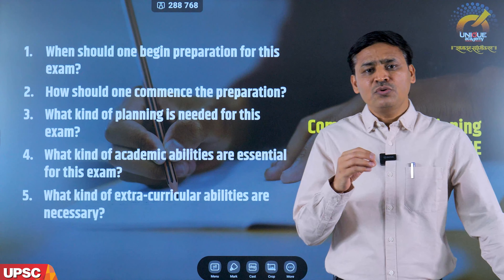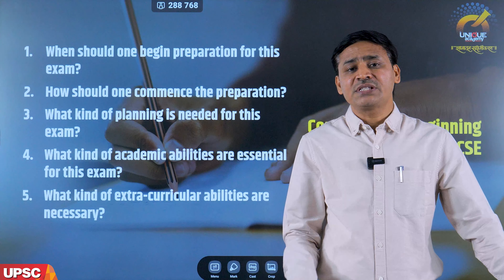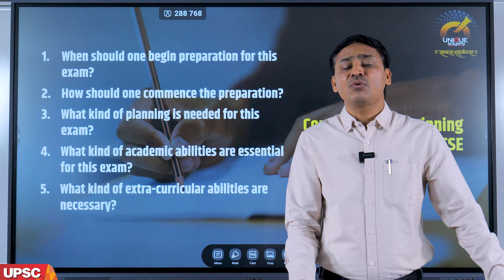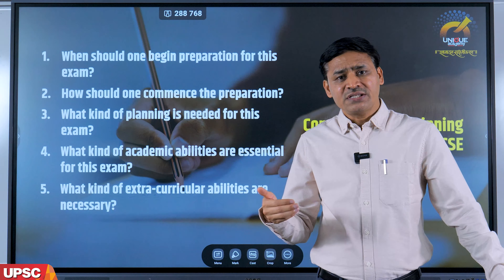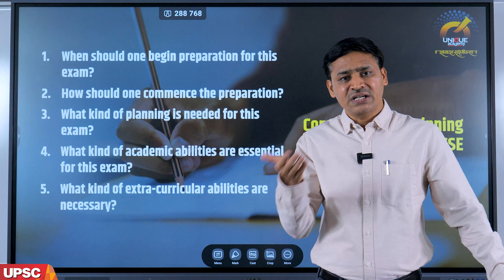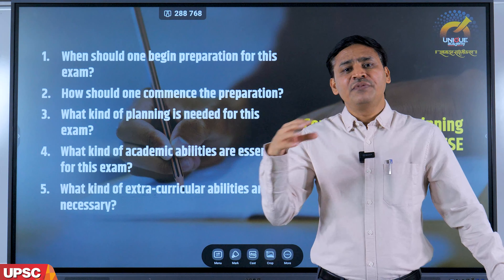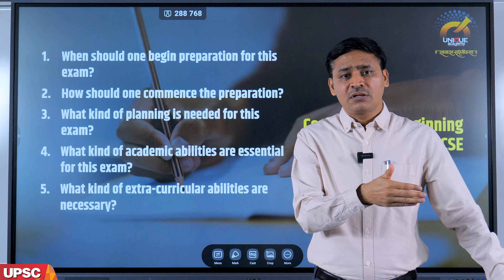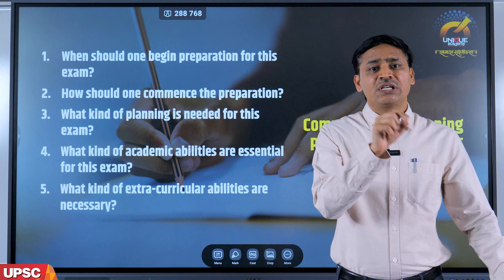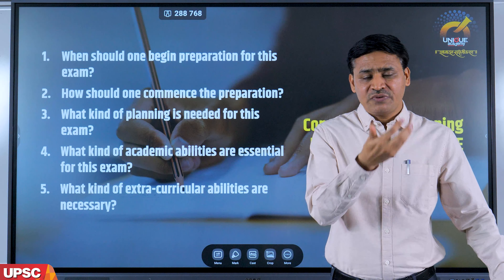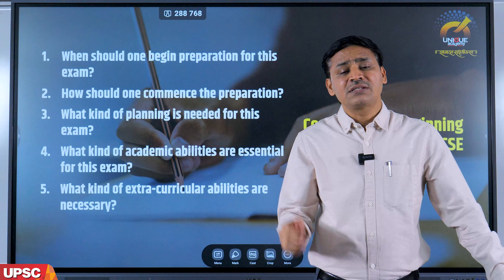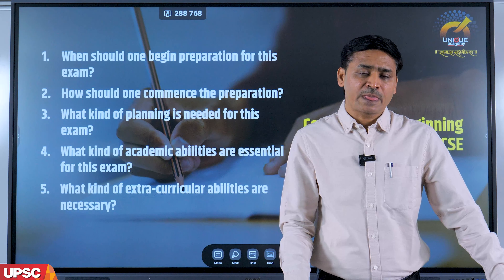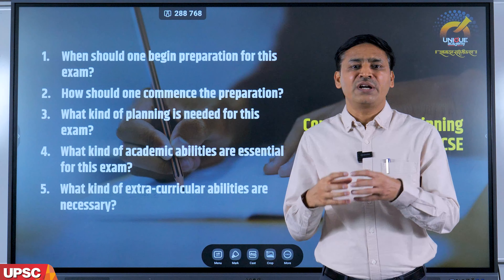Before moving to the preparation questions, let me elaborate on the scheme of the civil services examination. This examination is conducted in three phases. The first phase is the preliminary examination, which has two papers: Paper 1 is GS1 — General Studies — with 200 marks, and Paper 2 is CSAT — Civil Services Aptitude Test — also with 200 marks, making prelims 400 marks in total.